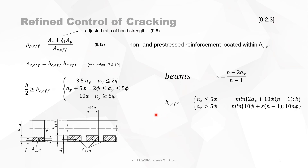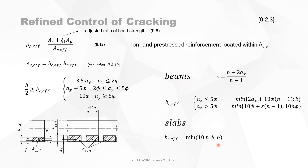For beams, the formula for BC,effective — the effective width — is also converted into an easier form, depending on the distance of reinforcement AX. When it's smaller than five times the diameter, you get one equation; when bigger than five times the diameter, another equation applies. The factor S is the center-to-center distance of the rebars. For slabs, BC,effective leads to a minimum of 10·φ or B.